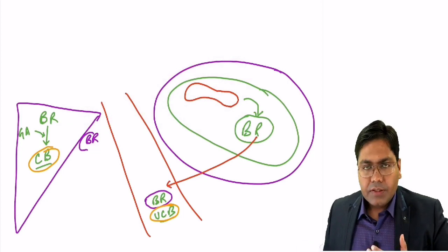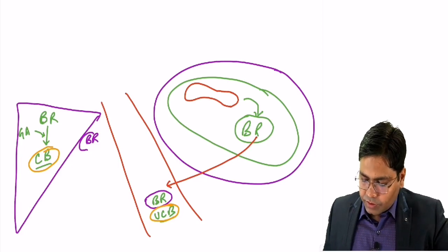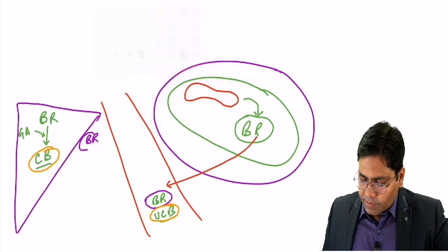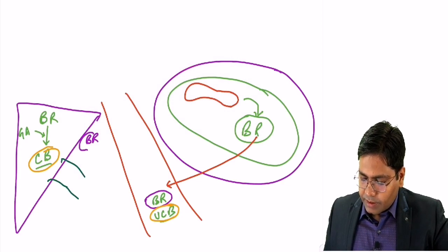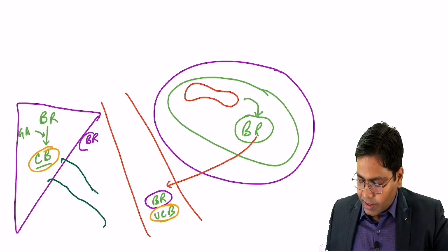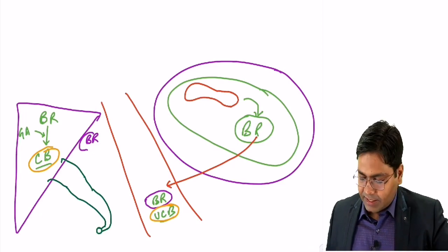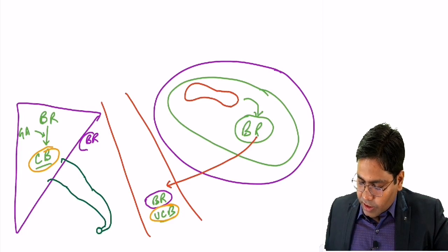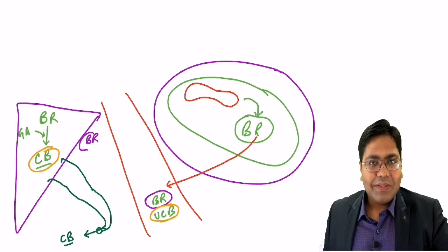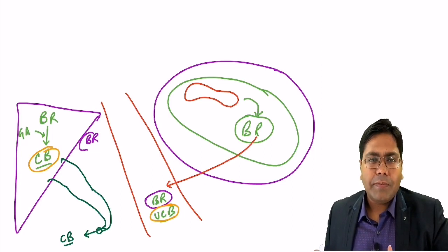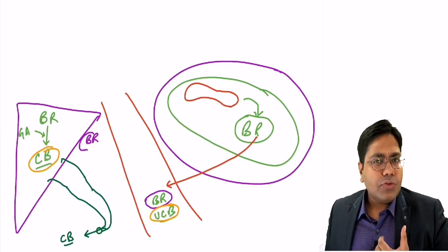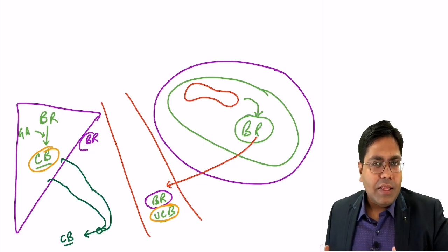Once this conjugated bilirubin is formed, it will come out inside the bile duct, and this bile duct will open into the duodenum, which is a part of the intestine. This conjugated bilirubin will come out in the duodenum along with bile juice, which also contains bile salts, bile acids, and some forms of cholesterol. So along with that, this conjugated bilirubin will be excreted out into the intestine.